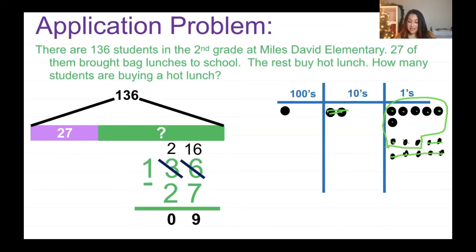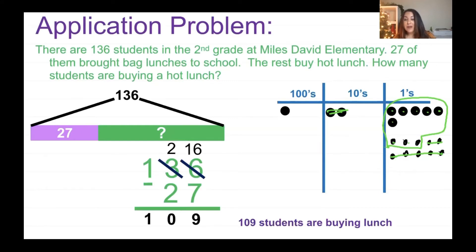Let's look at our hundreds place. I didn't have to do anything there — 1 take away 0 is 1. So 109 students are buying lunch at the school today.